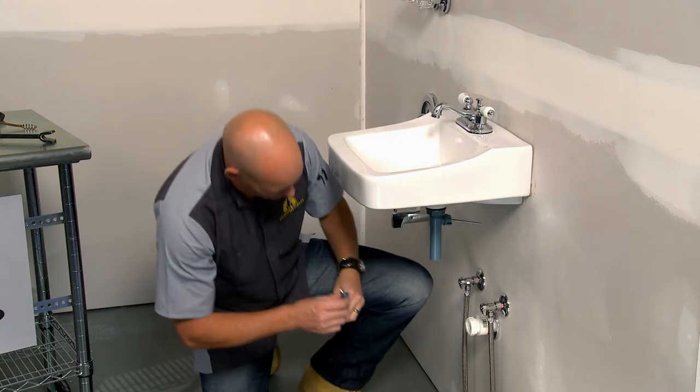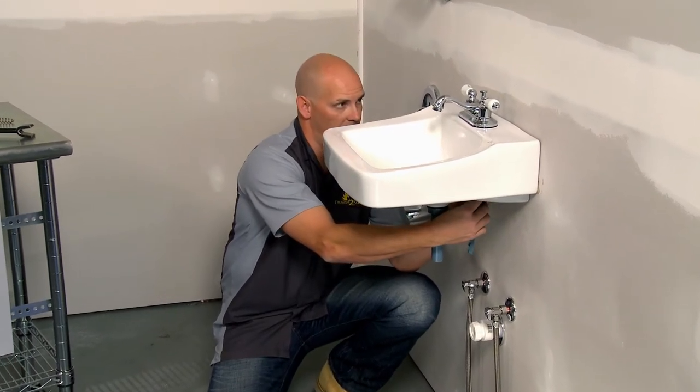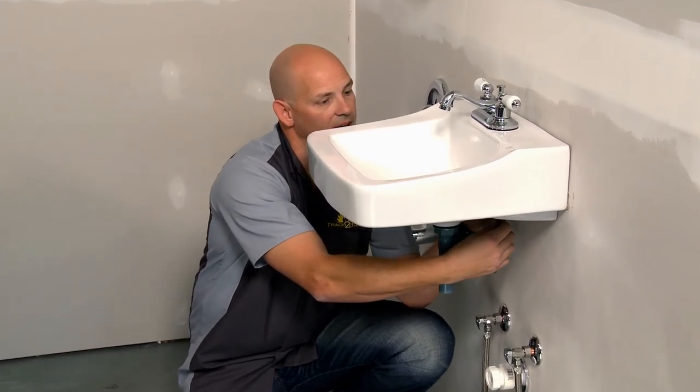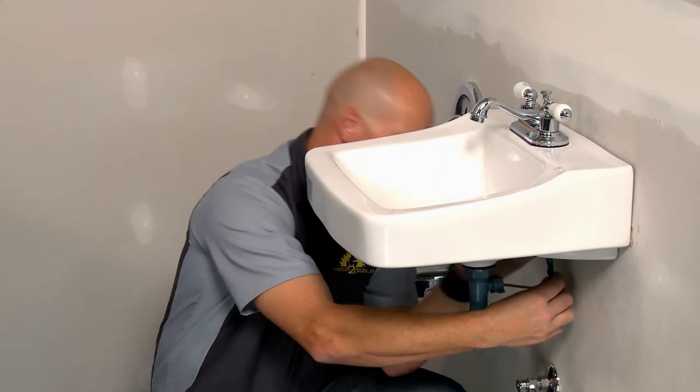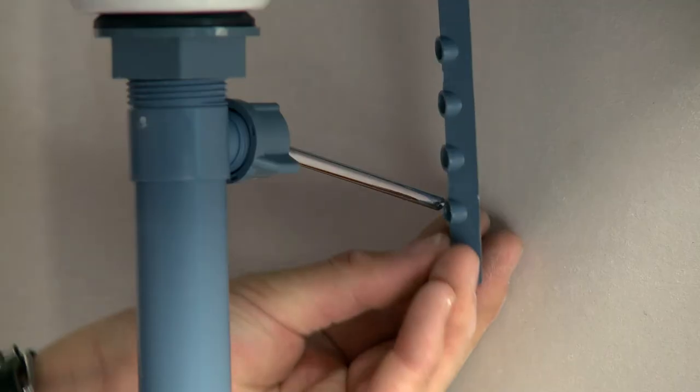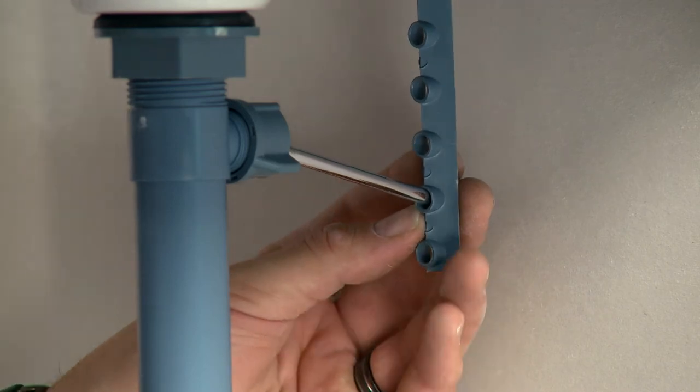Drop that rod in. Now with the rod all the way down against the faucet and with the control rod all the way down so that the stopper's all the way in the up position, I can pick the appropriate hole I want and then use the metal band to install it.